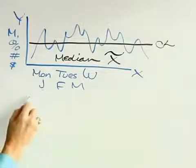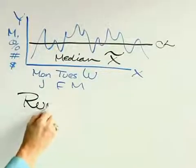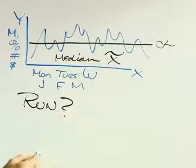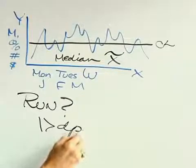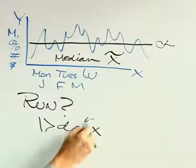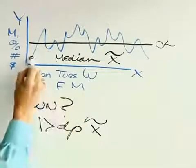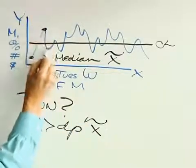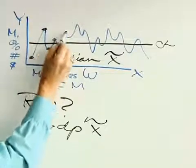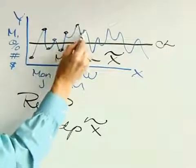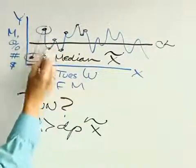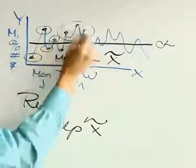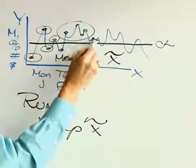Now what we're going to do is define a run. What is a run? A run is one or more data points on the same side of the median. So here we have one data point. Here we have one. One, one, one. But here we have one, two, three, four data points. A run can be one or more data points on the same side of the center line.